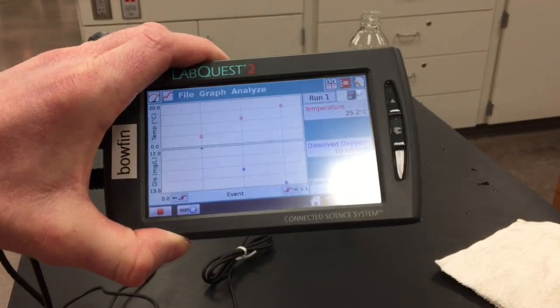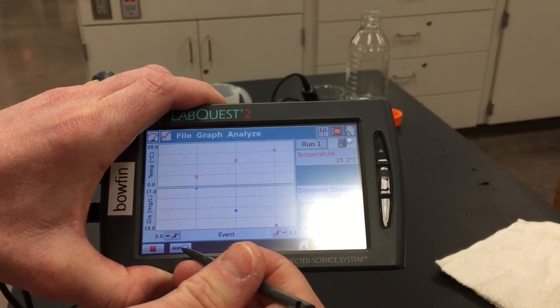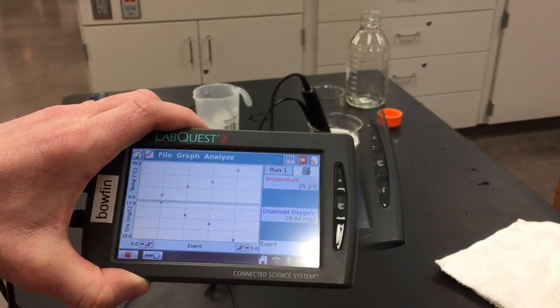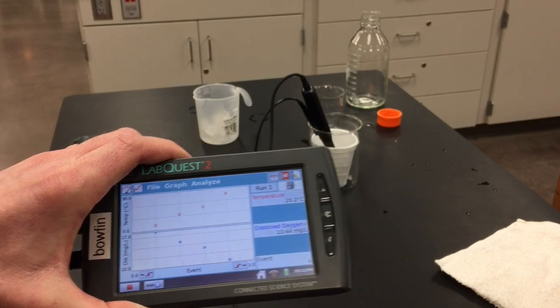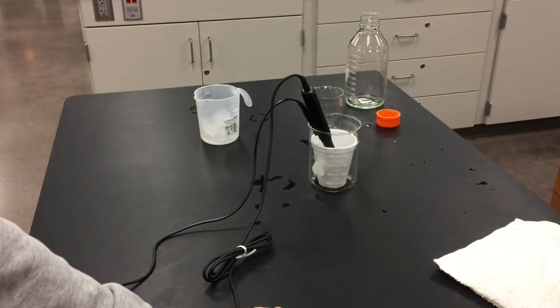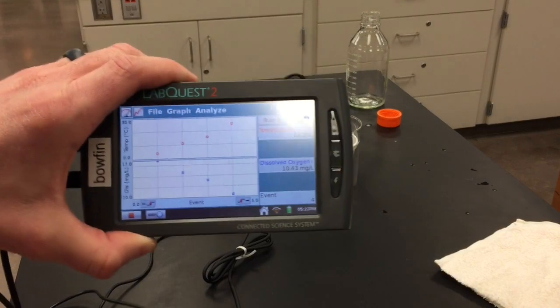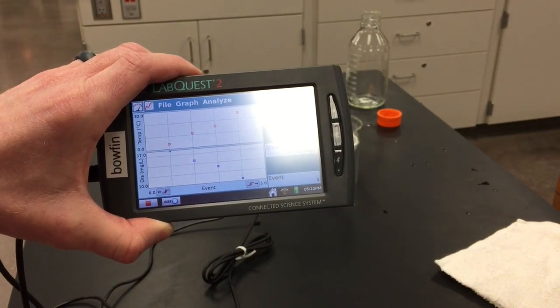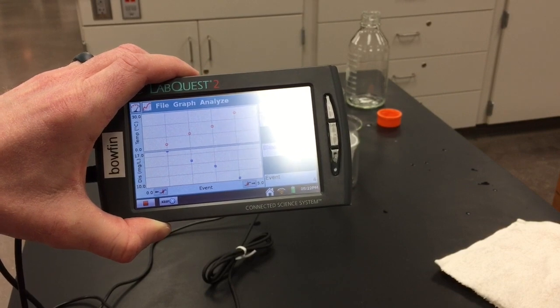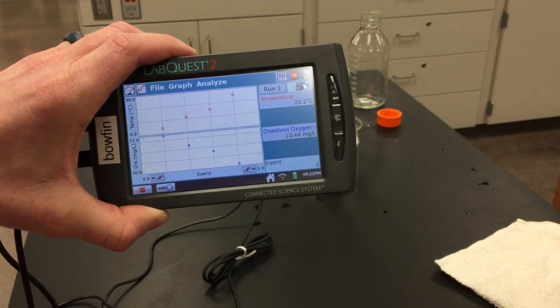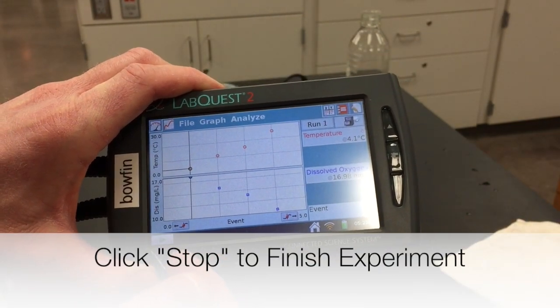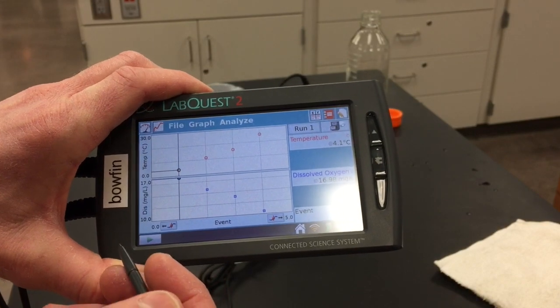OK, so we're going to collect our fourth and final data point. This one's with the warm water, so again, just like before, I'm going to select keep. All right, so I've collected all my data points. At this point, I can clean up the lab, but I want to keep this out because I'm going to want to transfer this to my iPad on graphical analysis. And the next video is going to show you how to take a look at the data. When you've done all the fourth data point, select stop and that'll end the data collection for that experiment.